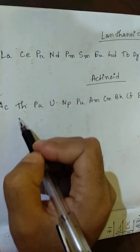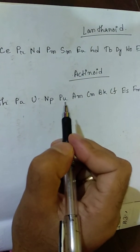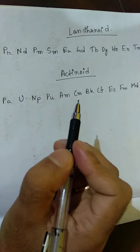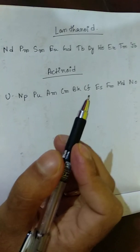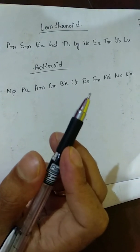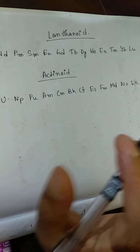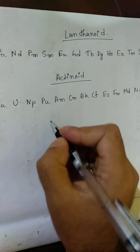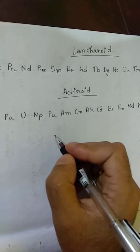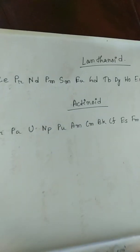Thank you. So these are the lanthanoid and actinoid series elements — the names, positions, and symbols. Try to learn them using the short trick. Thank you.